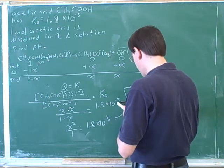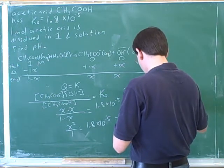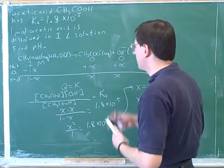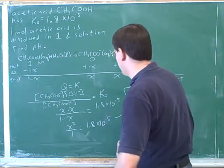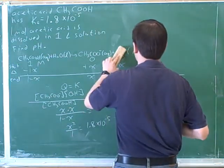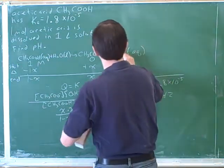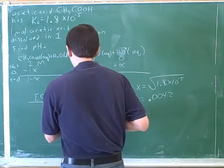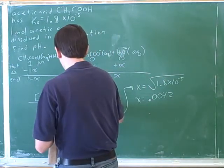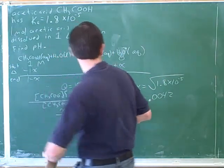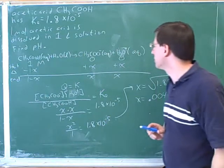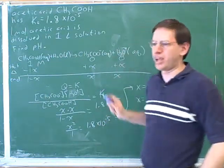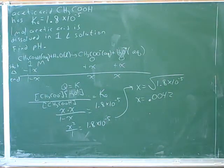Wait — how come it goes into OH⁻? Shouldn't it be H₃O⁺? I totally screwed up. So this should have been H₃O⁺ — I was just going too fast. This is an acid, so it's creating hydronium, not hydroxide.